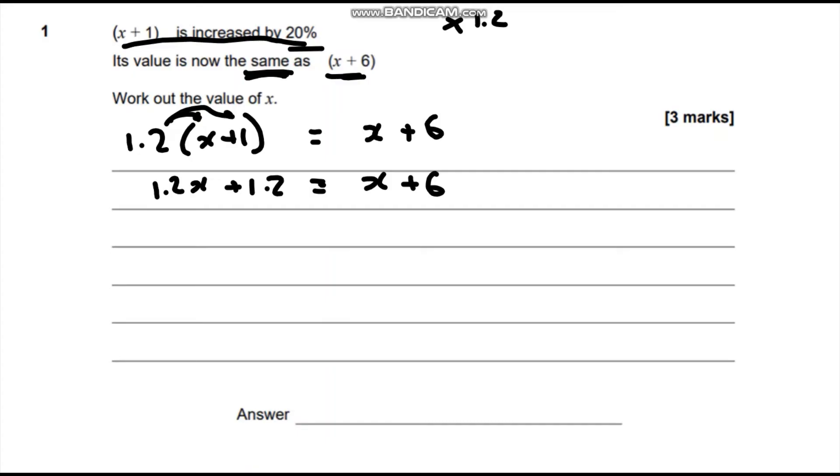When we've got x's on both sides, I like to say get rid of the least amount of x. In this case the least amount of x is x. So we're going to take away x from both sides. 1.2 take away 1 is 0.2. We've still got plus 1.2. Those cancel out and it leaves us with just 6.